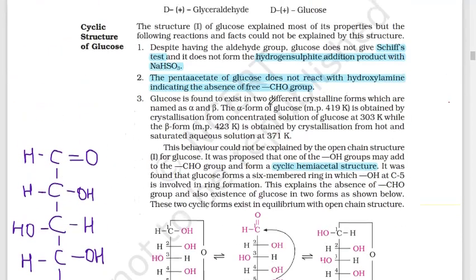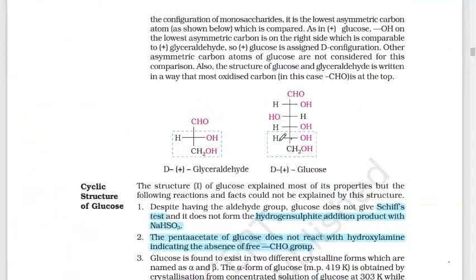In the straight-chain state, glucose has the same open-chain form. Carbon number one is the first carbon, then two, three, four, five, and six. So carbon number one through six are present.